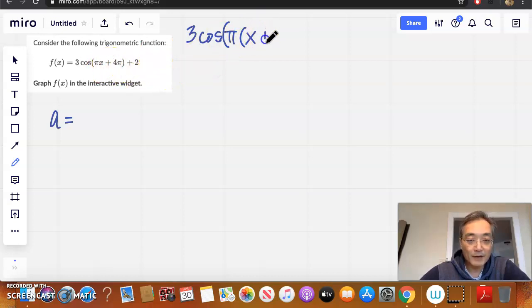And then I am going to write what's left. If I factor out a π from πx, I am going to have x left. And if I factor out a π from 4π, I am going to have 4 left. Plus 2. So now, from this factored form, let's take a look at what our values are.